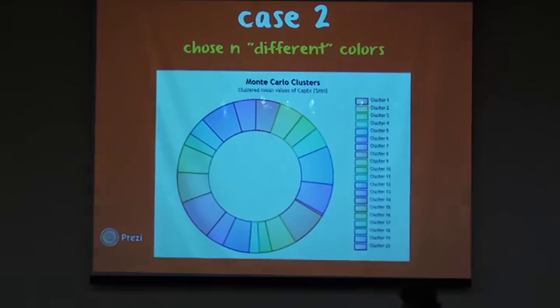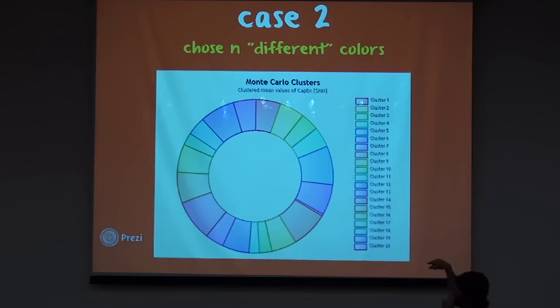The other problem is when we try to generate N different colors. I use quotes here because difference is exactly what we need to define. In this case, we have a donut with 20 slices, and it turns out that these two colors might not be distinguishable for the user. So probably they are not too distant from each other. The question is how to measure the distance.